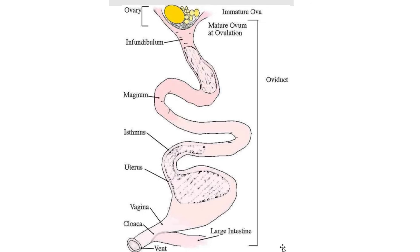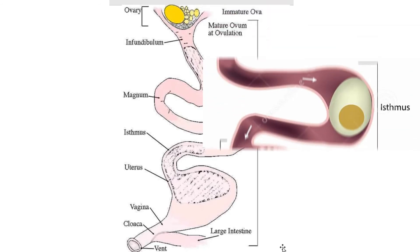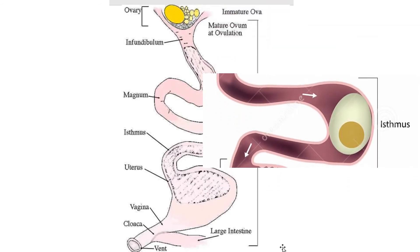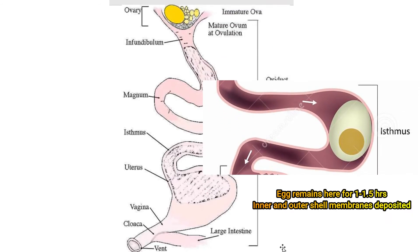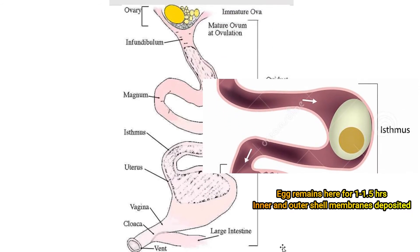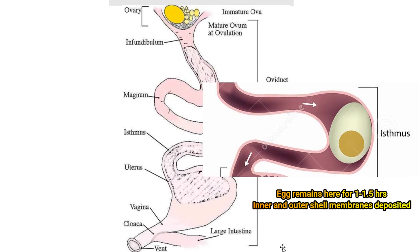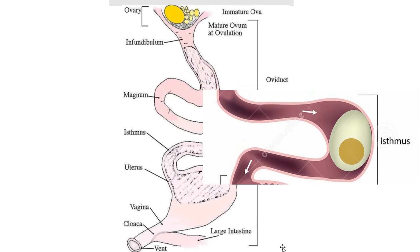Next, we have the isthmus, where the egg remains for 1 to 1.5 hours. This is also where the inner and the outer shell membranes are deposited.